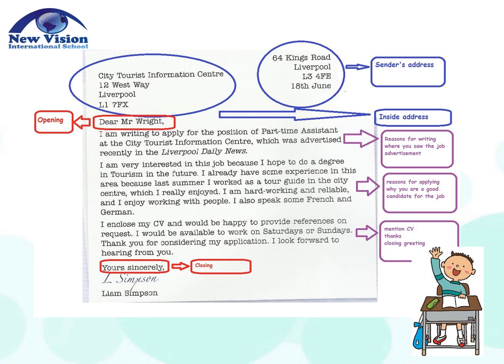Here we have an example of a formal letter, and here are the parts. As you can see here, the upper part on the right is the sender's address — this is the address of Liam Simpson. Now we have here the inside address, which is the address to whom he is writing the letter, and this address is the address of Mr. Wright. And on the left, we have here the opening. And we have here the body, where the specific reasons why he wrote the letter are stated — reasons for writing, where you saw the job advertisement, reasons for applying, why you are a good candidate for the job, and mention of the CV, saying thanks and closing greetings. And finally, we have here the closing, and then the last part is the signature.